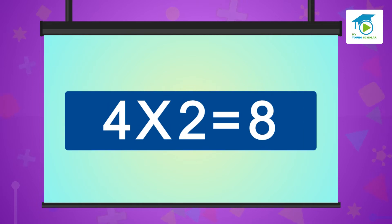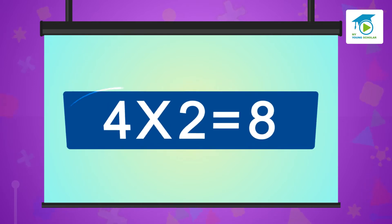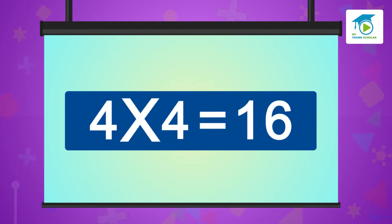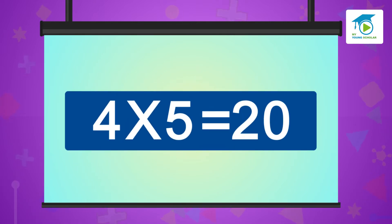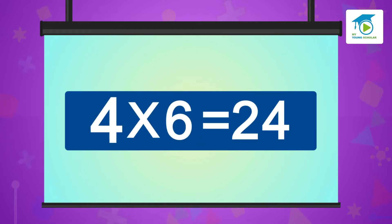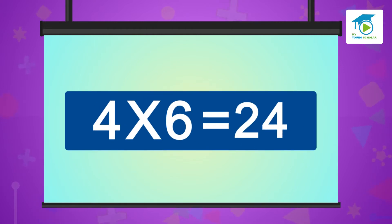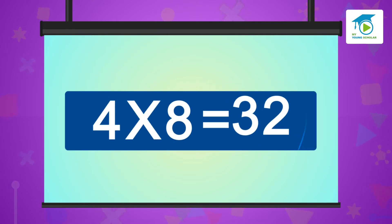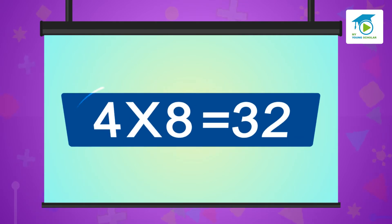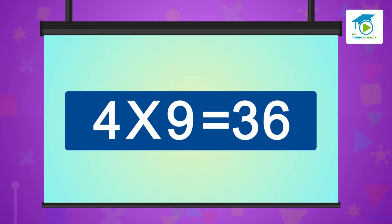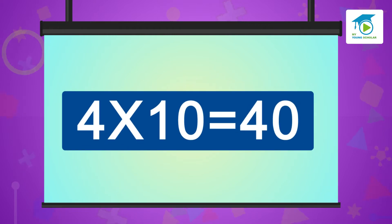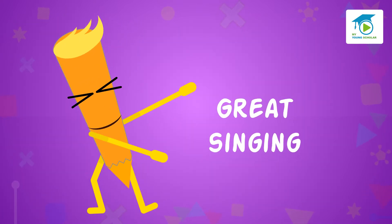four twos are eight, four threes are twelve, four fours are sixteen, four fives are twenty, four sixes are twenty-four, four sevens are twenty-eight, four eights are thirty-two, four nines are thirty-six, four tens are forty. Great singing.